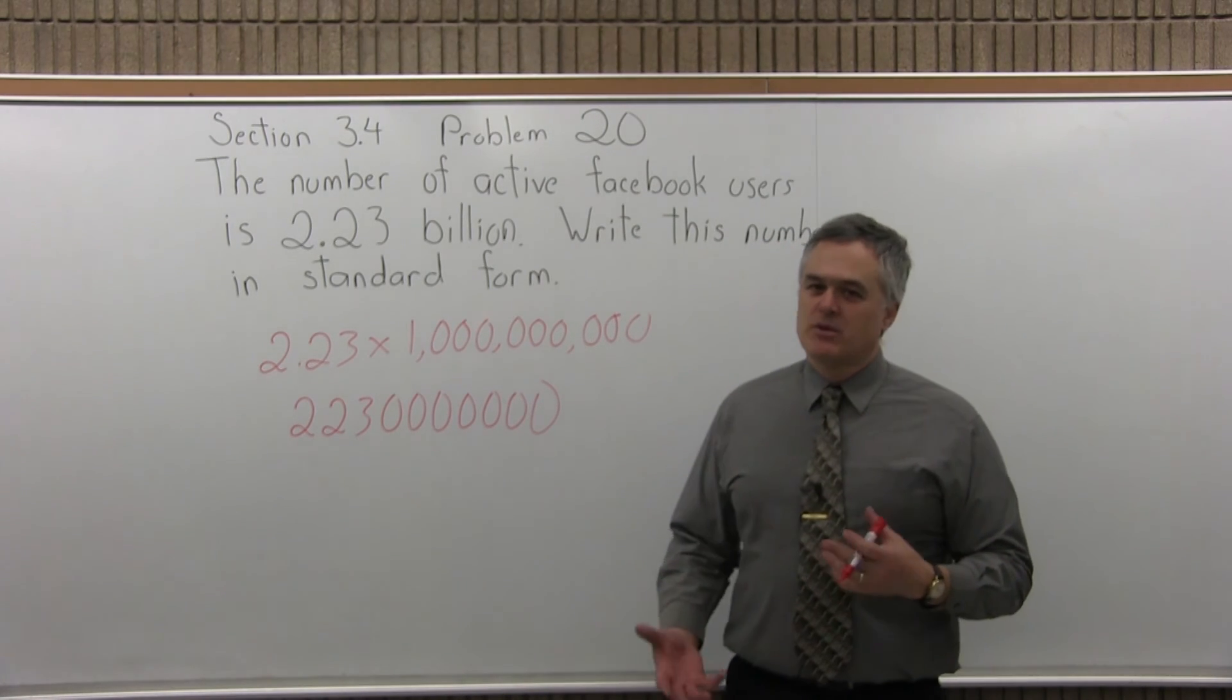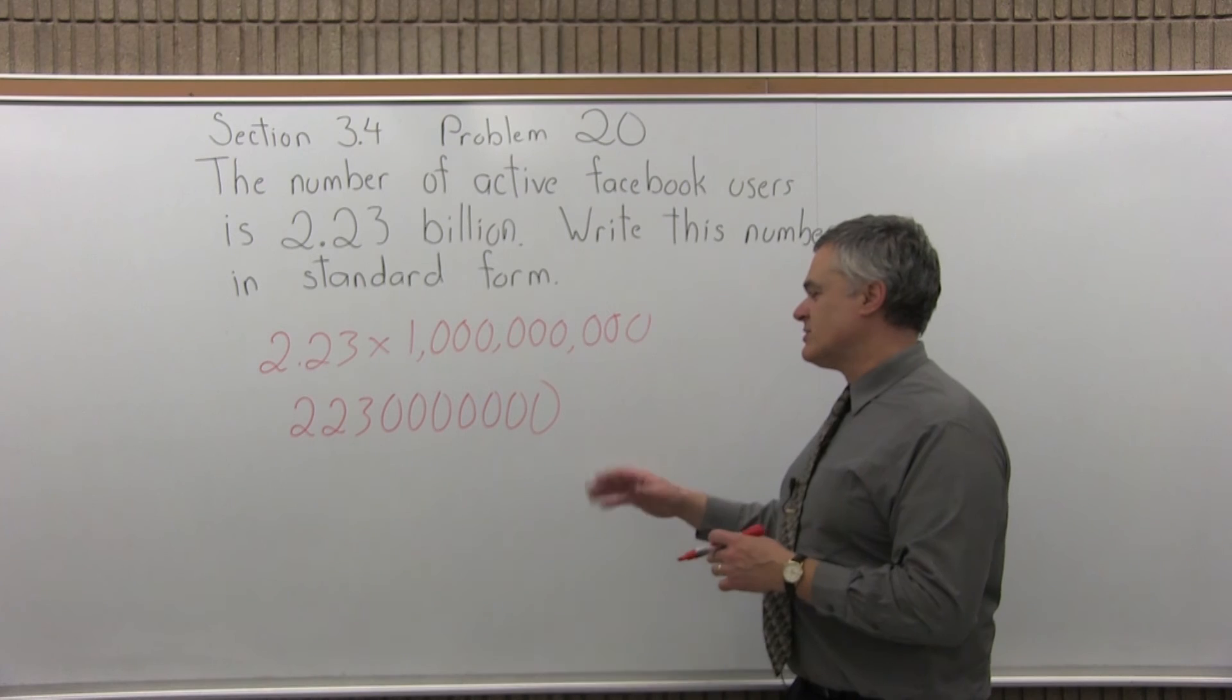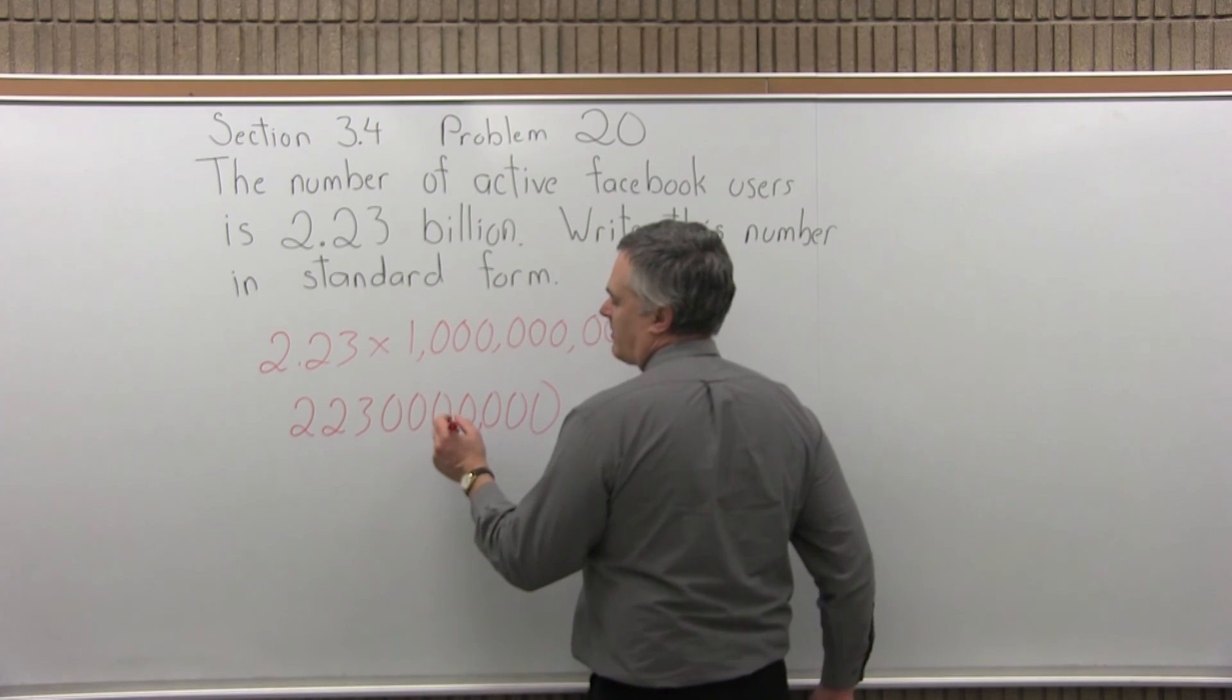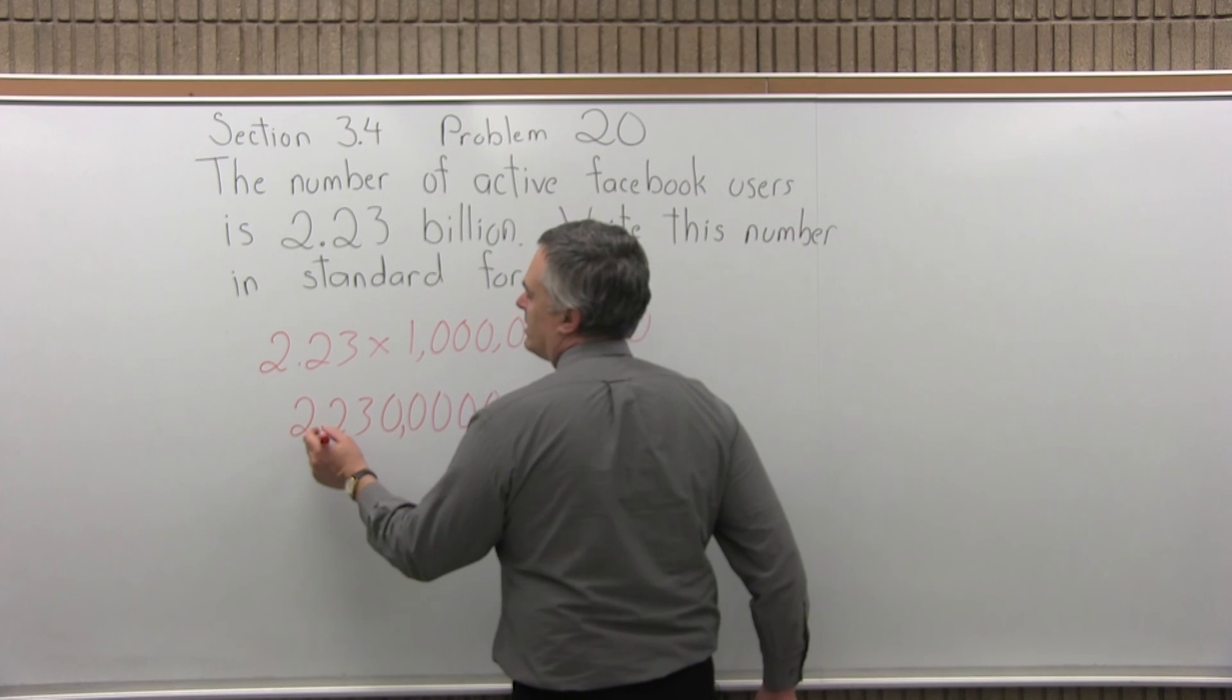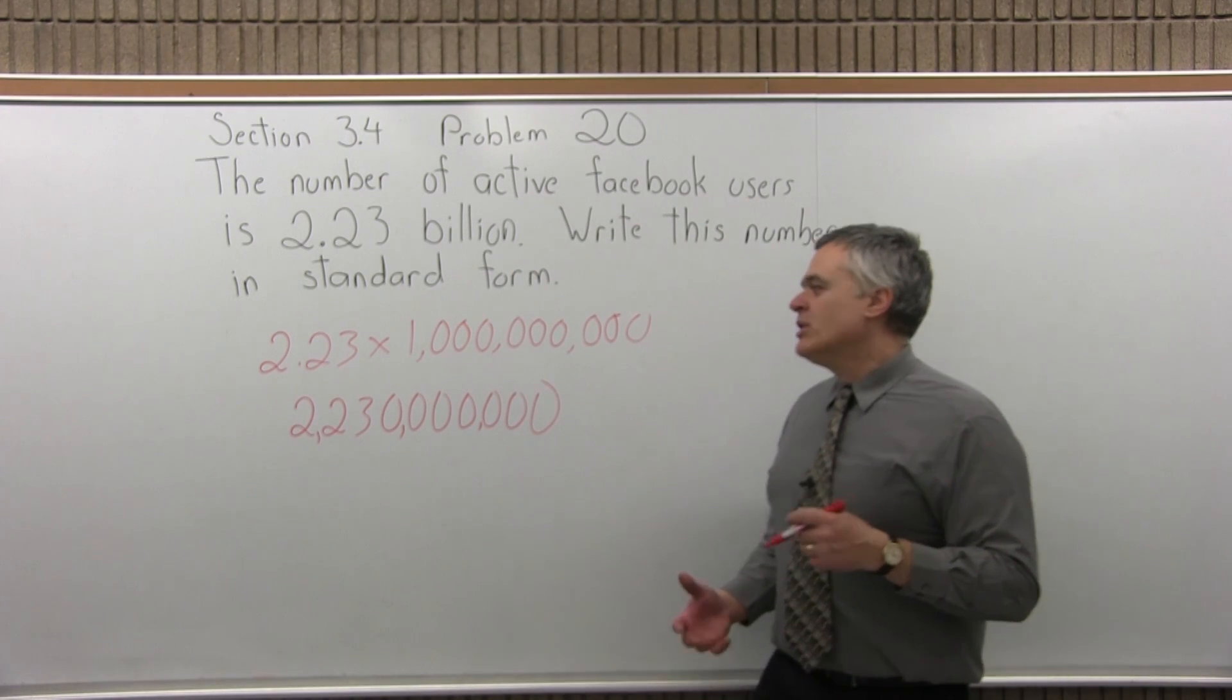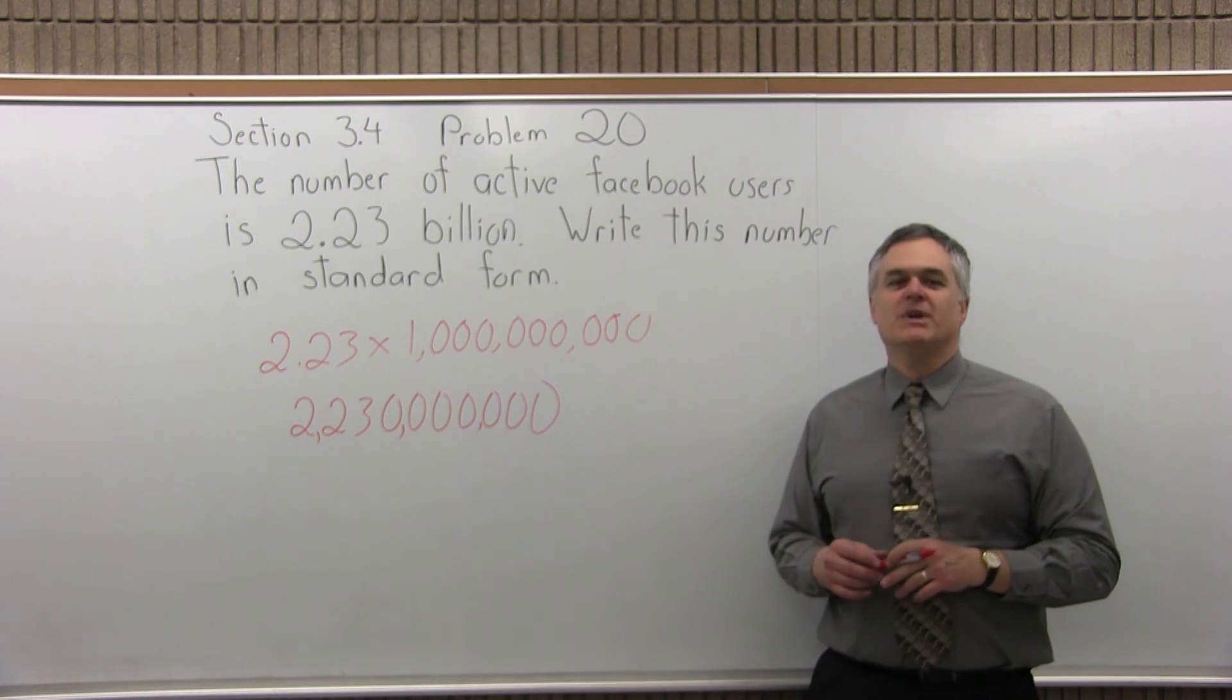Now if you want to do a nice job, you can put in some commas too. Every three digits, you put in a comma. That's optional. If I go in three, I'll put a comma there. Three more, I'll put a comma. Three more, I'll put a comma. So you could read it as a regular number: 2,230,000,000.